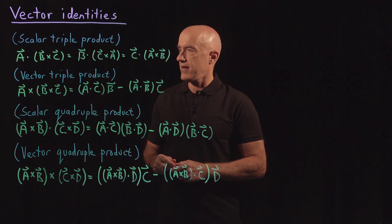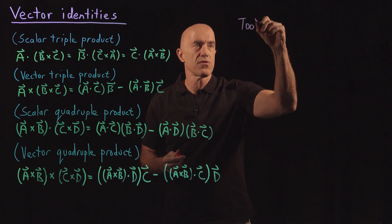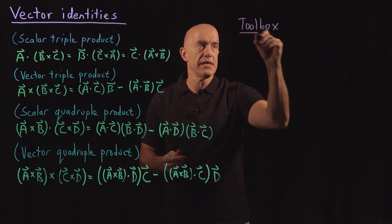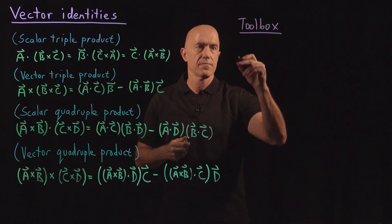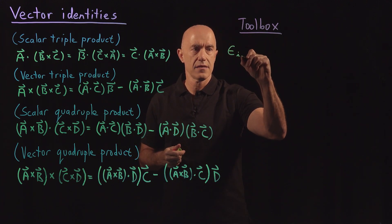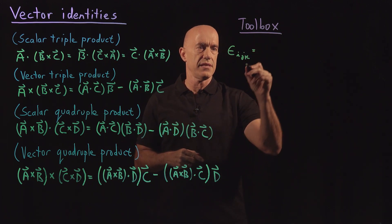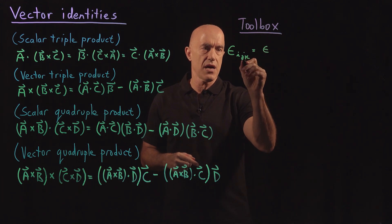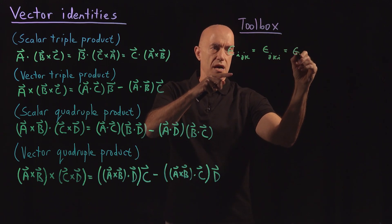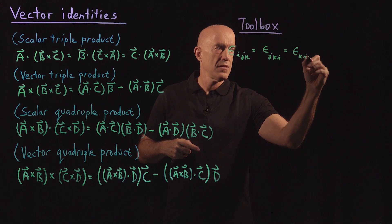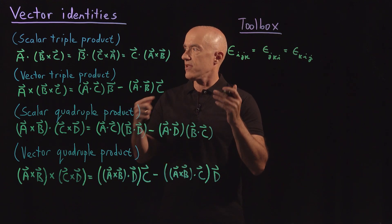How do we prove these identities? We need a toolbox, which we already developed. So let's go through what we will need in our toolbox. If we look at the Levi-Civita symbol, epsilon_ijk, we're allowed to cyclically permute these indices. So this is equal to epsilon_jki, and is equal to epsilon_kij. So that's kind of an operation we're allowed with this Levi-Civita symbol. That's one of the elements of our toolbox.